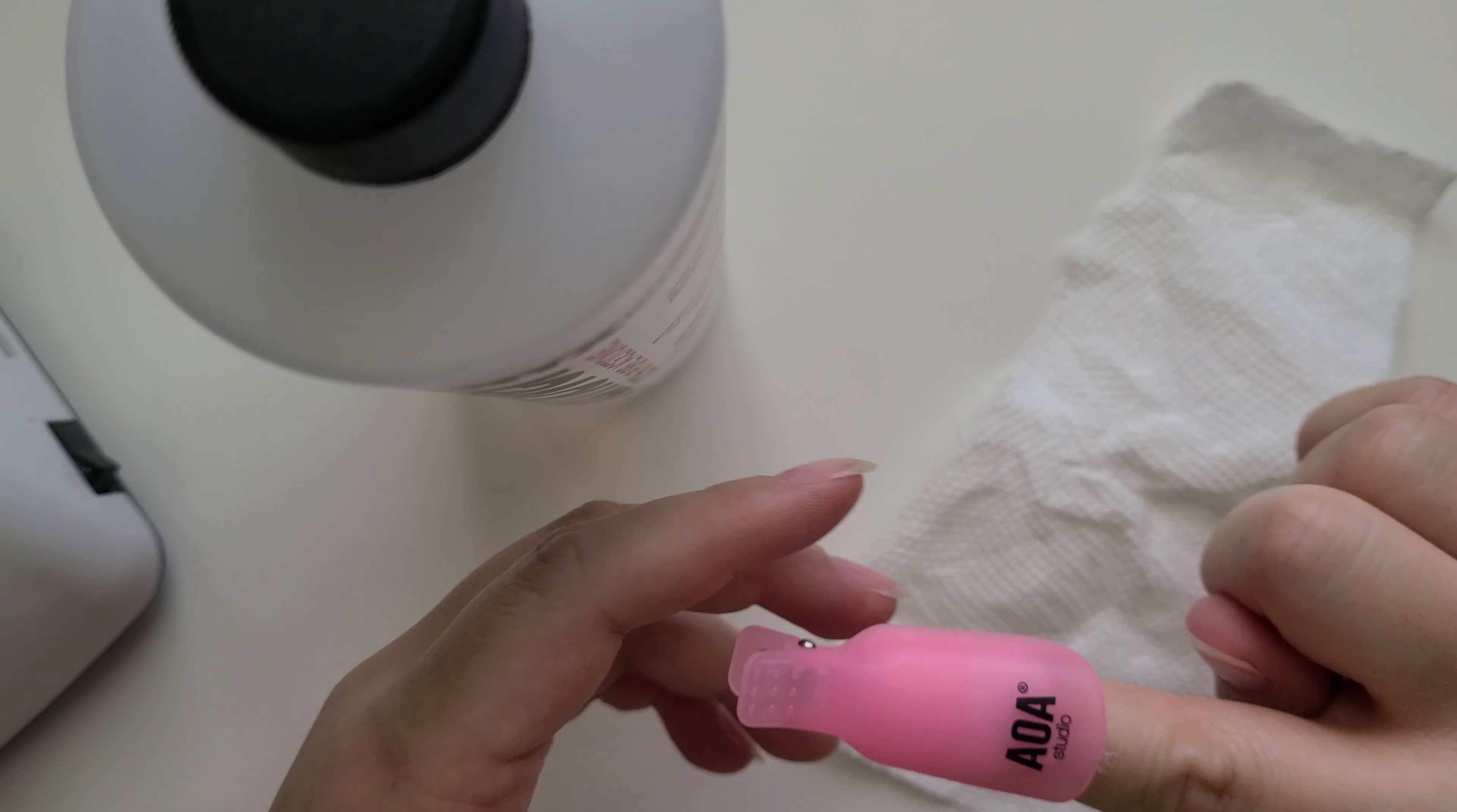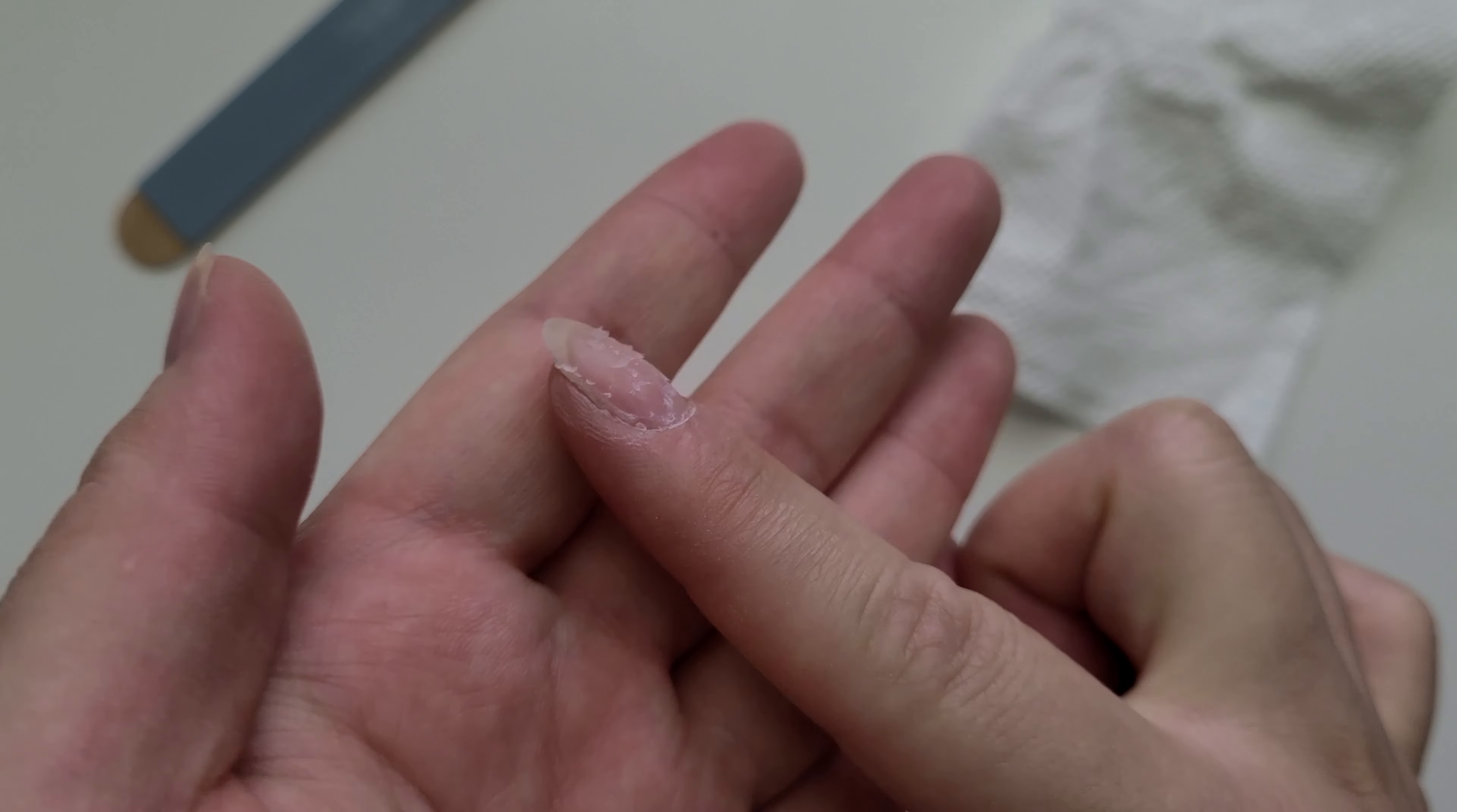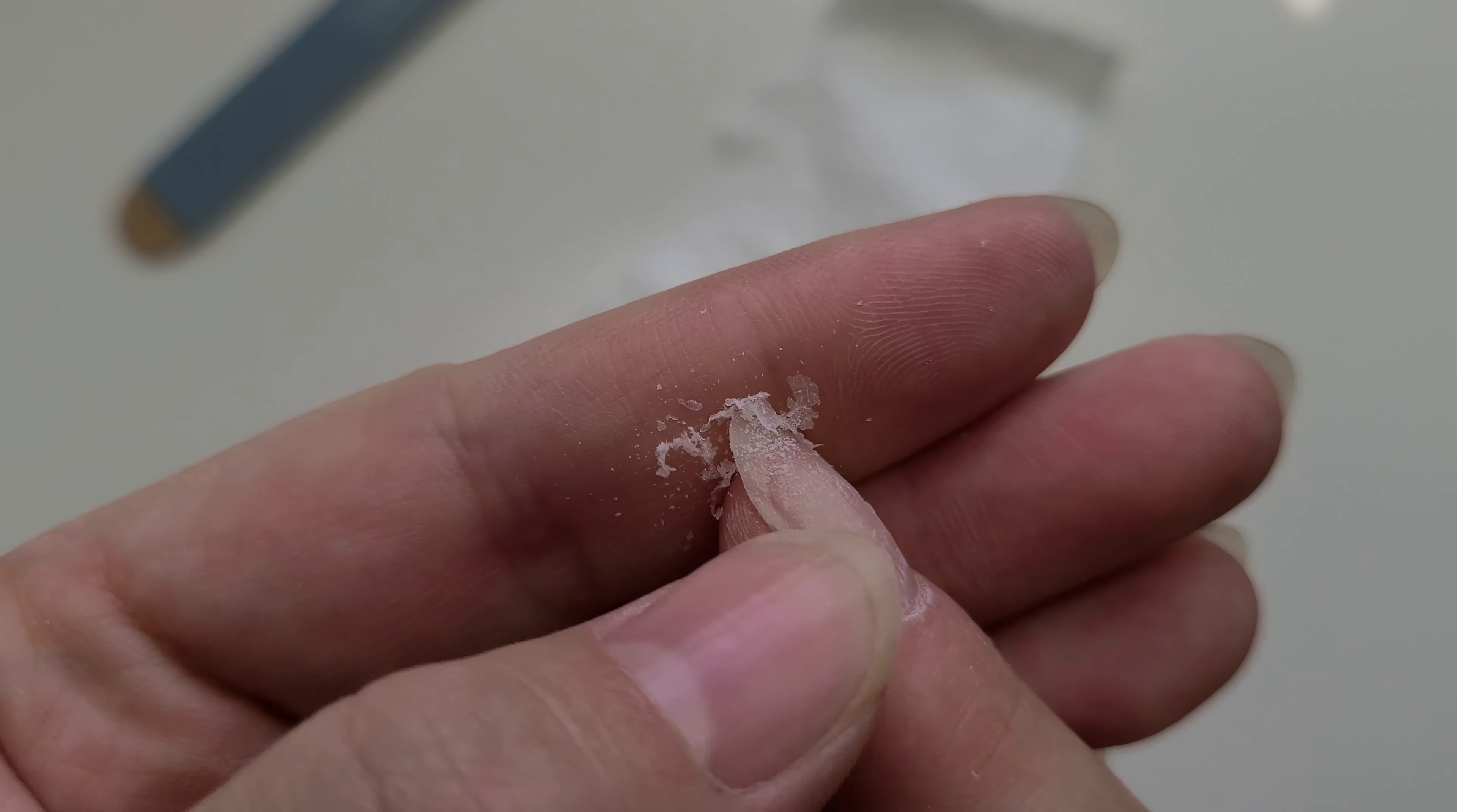Step four: you want to soak for 10 to 15 minutes, check it, and then gently scrape it and then rewrap it and repeat until you get all the gel off. So here I checked after five minutes and you can already see the pure acetone doing a good job taking off the top layer of that gel.